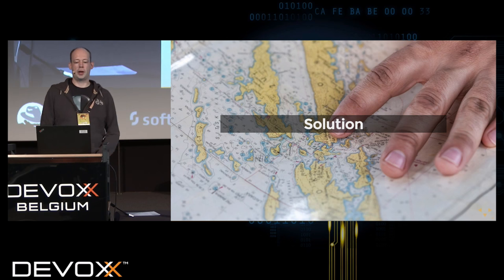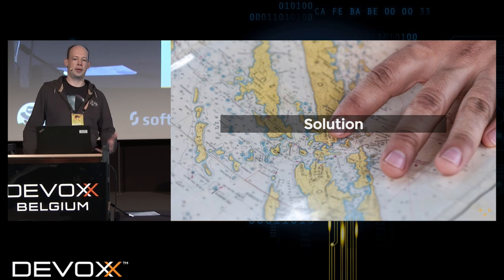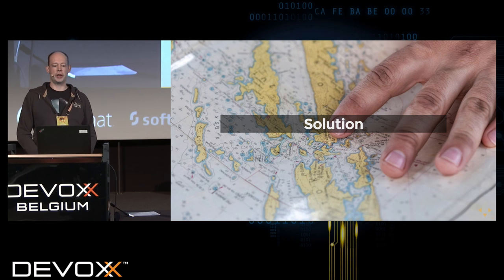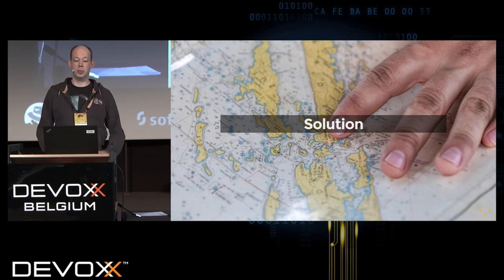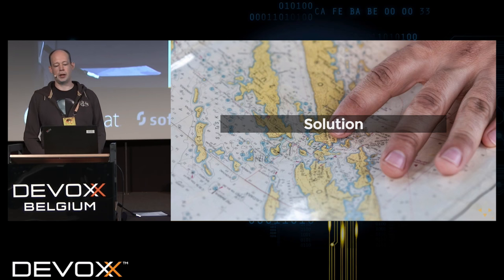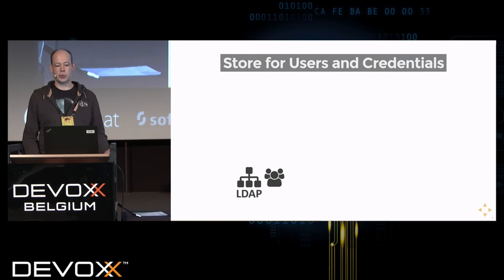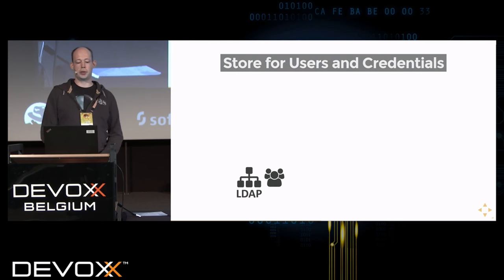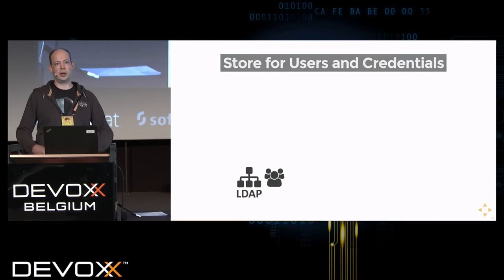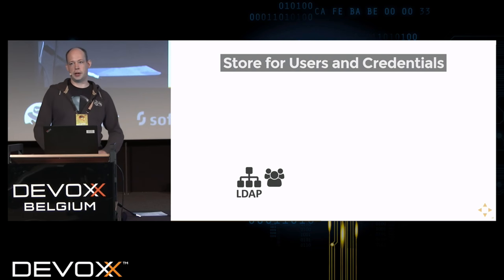Based on these requirements we can sketch a solution as a blueprint for authentication and authorization in a world of microservices and multiple applications at scale. First, we need a central store for users and credentials. Depending on scale, this can be as simple as a central LDAP server like Active Directory, or for larger scale you'd use NoSQL databases like Cassandra or a key-value store that scales with your application.